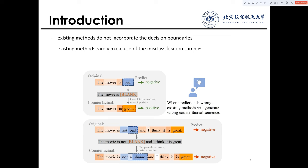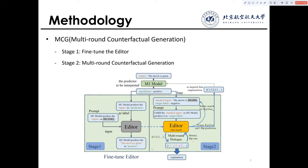To tackle these problems, we propose MCT. In stage 1, we fine-tune the editor to introduce the decision-making boundaries. That's the left part of this figure.